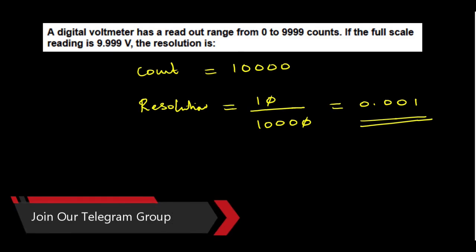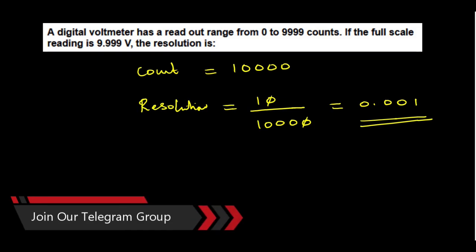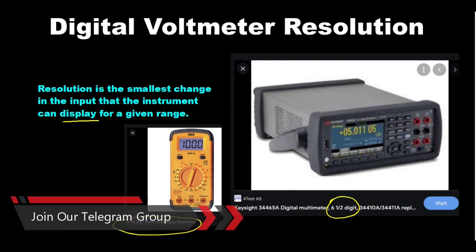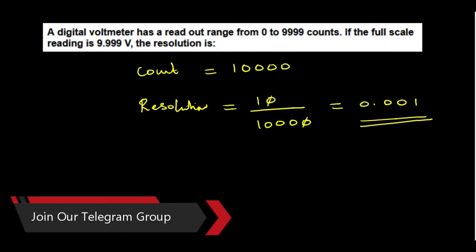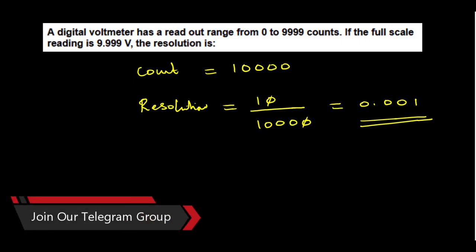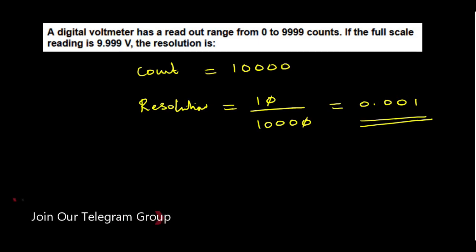I hope you understood what is the meaning of 3 and a half digit, 4 and a half digit, 3 digit, or 4 digit displays. If you like the video, please share with your friends. There are more terms like accuracy and precision, and I will make one more video on this multimeter to cover those specs. Thanks for watching.